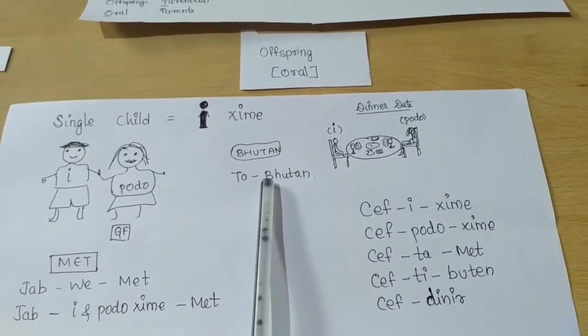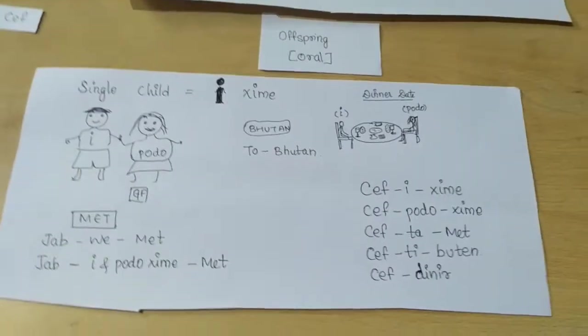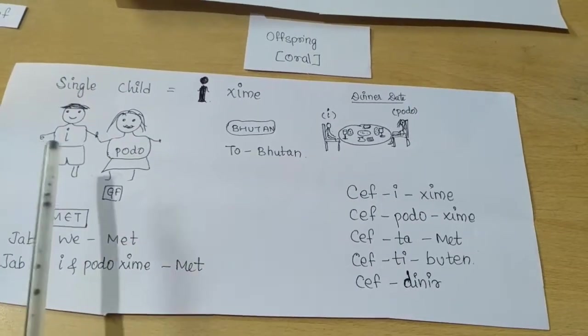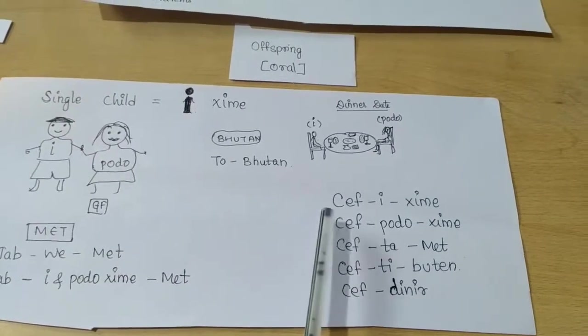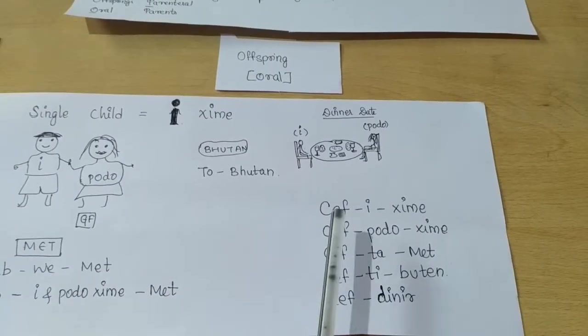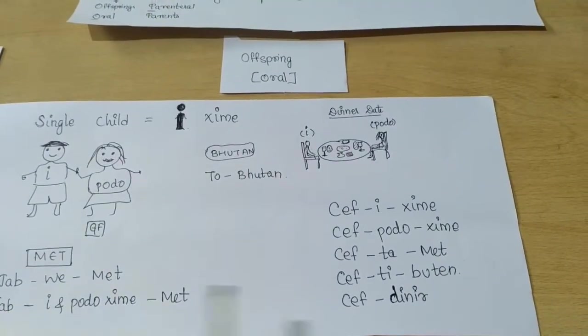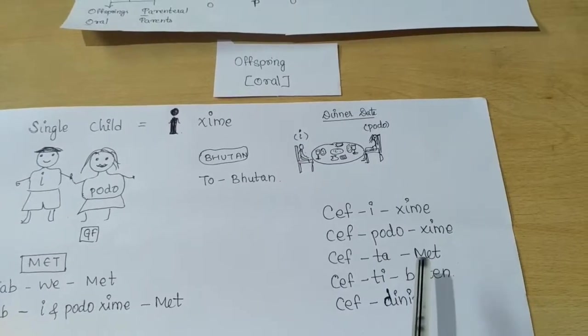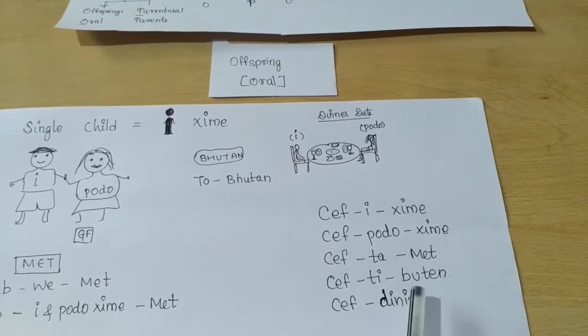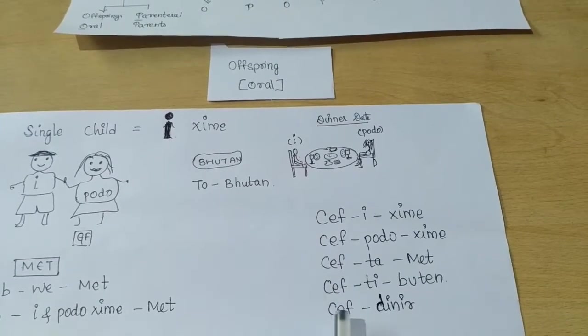They went to Bhutan for dinner. This boy I Zyme gives us the drug Cefixime. The girlfriend gives us the drug Cefpodoxime. The movie Job We Met gives us the drug Ceftibuten. They went to Bhutan, the drug is Ceftibuten. For dinner, the drug is Cefdinir.